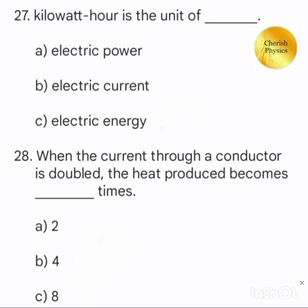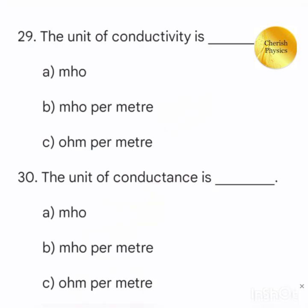When the current through a conductor is doubled the heat produced becomes dash times. The unit of conductivity is. The unit of conductance is.